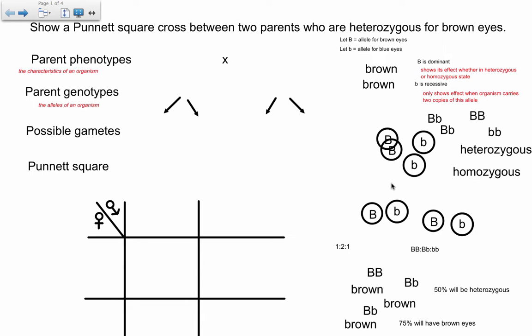Let's look at the most basic type of genetic cross, which is a monohybrid cross.